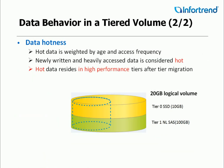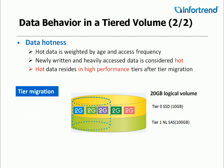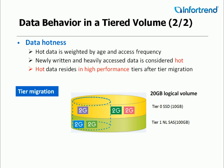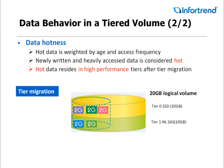Users can manually migrate data or migrate automatically through schedules as data are labeled hot, warm, and cold. InfoTrend's storage tiering system automatically determines data's hot, warm, or coldness, and migrates them accordingly.